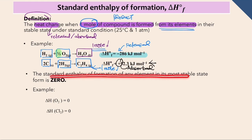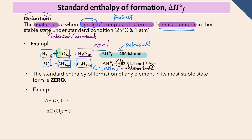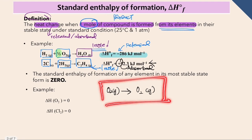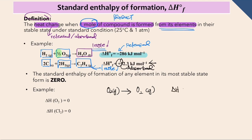For standard enthalpy of formation, if the element is already in its most stable state, its standard enthalpy is zero. For example, delta H for oxygen gas: O2 is the most stable form of oxygen, so since it's the same before and after, delta H equals zero. Similarly for Cl2 — Cl2 exists as a diatomic gas, so Cl2 gas forming Cl2 gas means delta H equals zero.